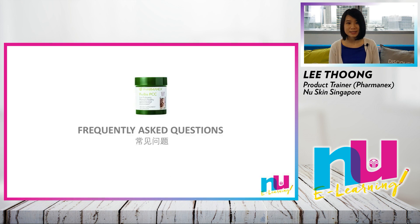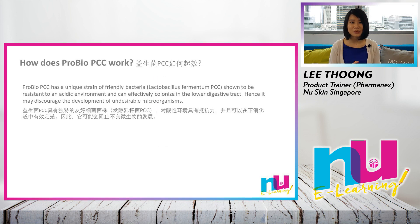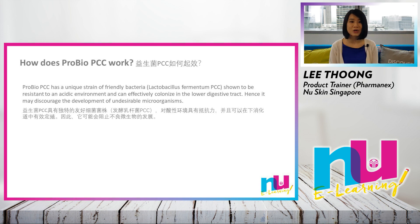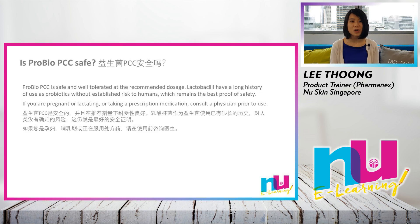To get those benefits, follow the recommended use: take one capsule daily with food. Now let's look into some frequently asked questions. How does Probio PCC work? Probio PCC's unique strain of friendly bacteria, Lactobacillus fermentum PCC, can effectively colonize in the lower digestive tract, helping to discourage the development of undesirable microorganisms.